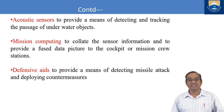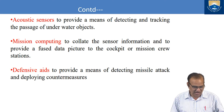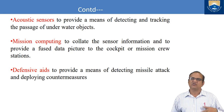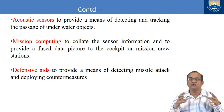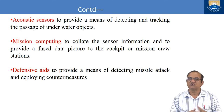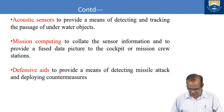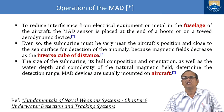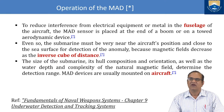Defensive aids provide a means of detecting missile attack and deploying countermeasures. If your aircraft is flying and a missile is coming to attack, defensive aids help you defend yourself. All military aircraft must be equipped with such aids. I will also talk about the operation of the Magnetic Anomaly Detectors.